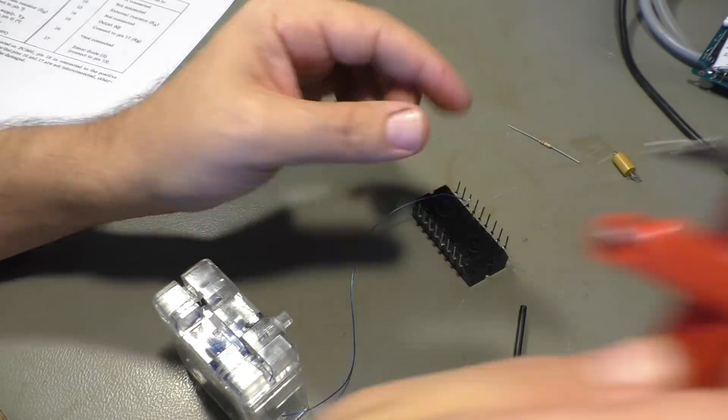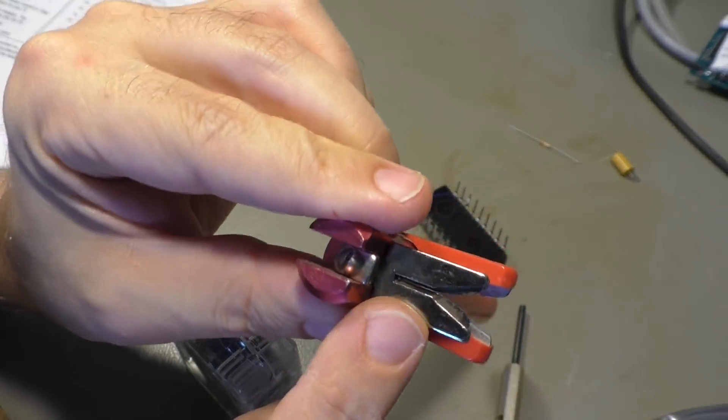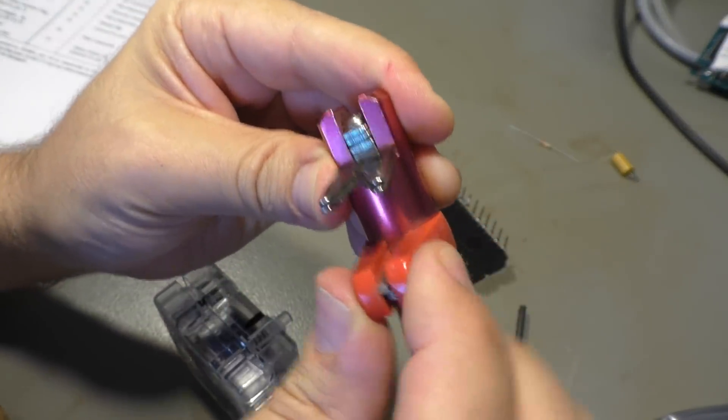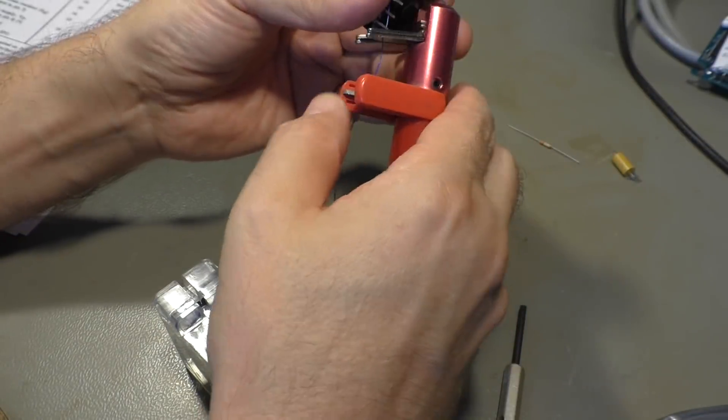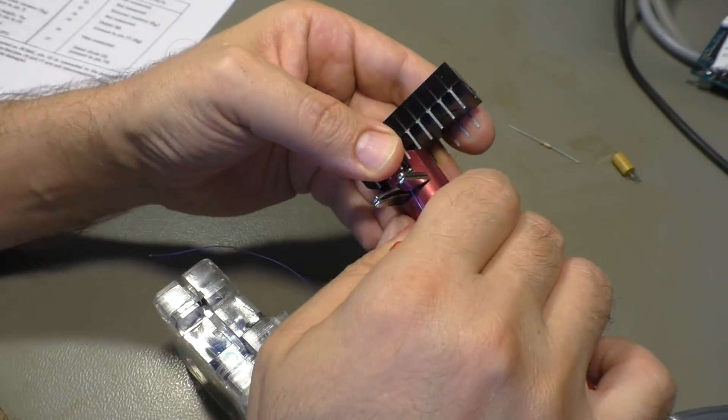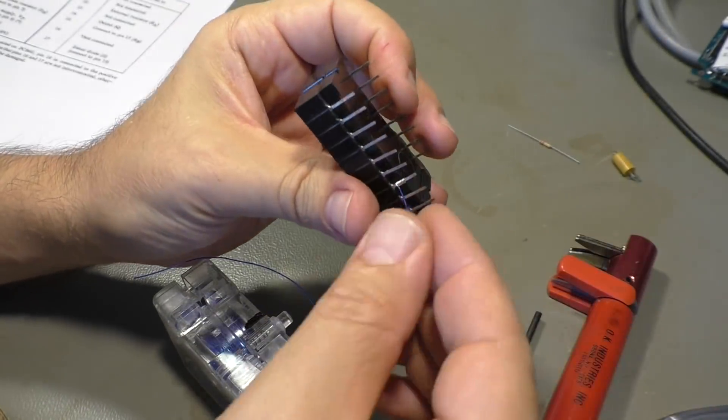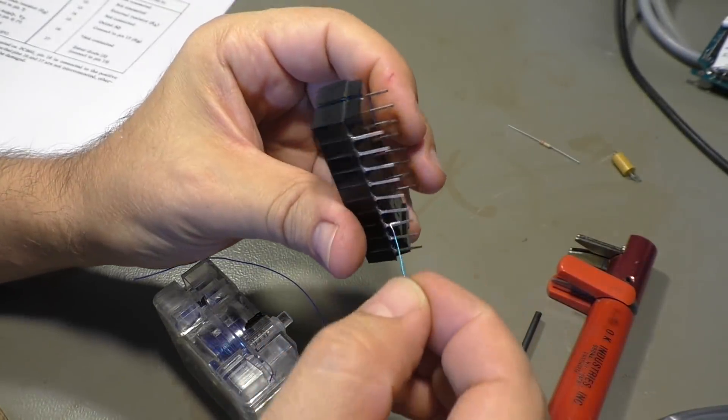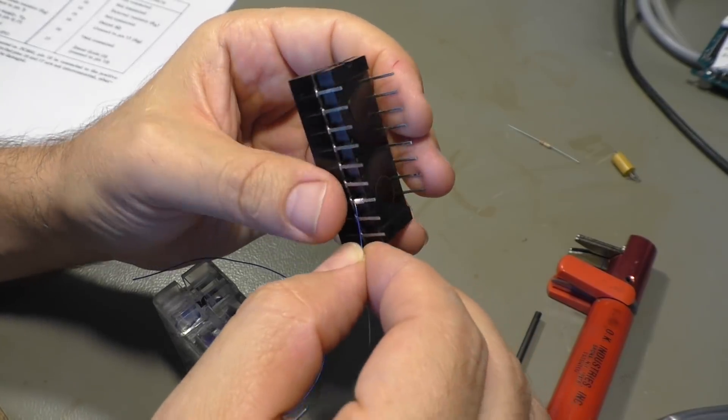Now of course there are other tools like this one. This is the stripper here and the cutter here, so we can use that to strip and cut almost in the same moment. You see I only left a short piece of insulation there.